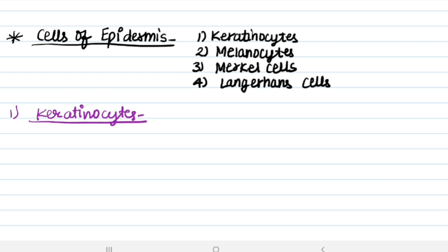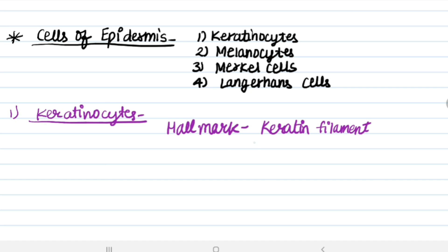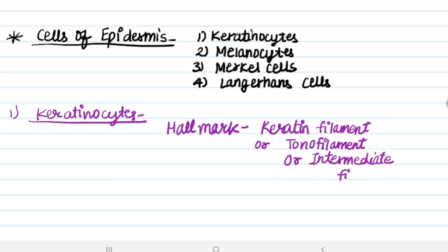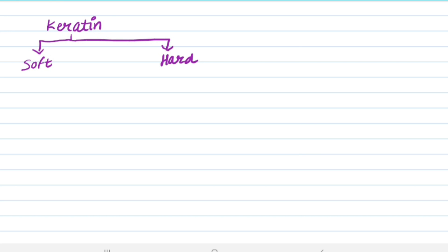First, we will discuss about keratinocytes. The hallmark of keratinocytes is the keratin filament, which is also known as tonofilament or intermediate filament. Keratin is of two types: hard and soft.